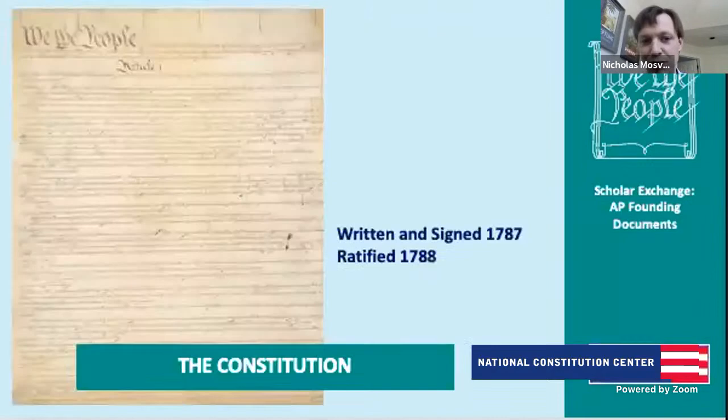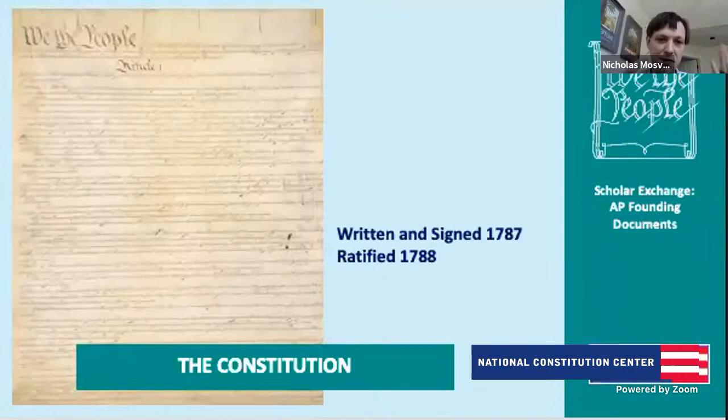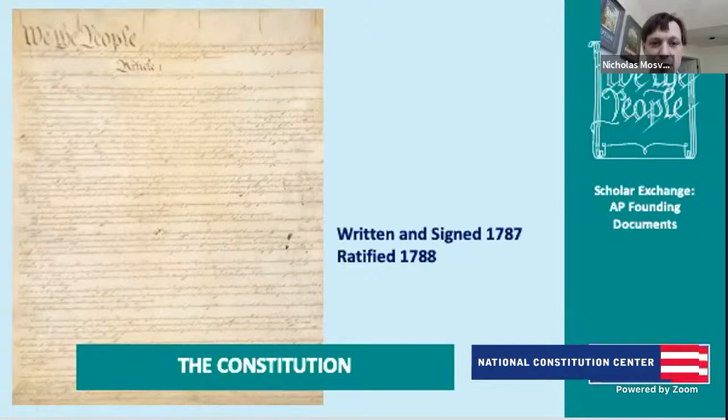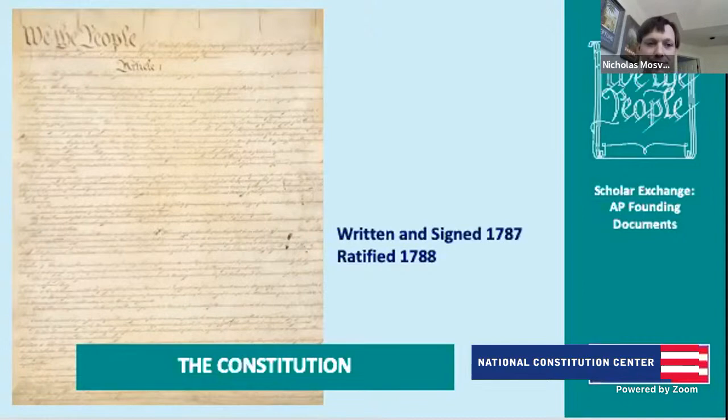The language of the preamble on popular sovereignty is one of the key links between the documents. As we turn to the Federalist Papers, the running theme is 'We the People' — the people themselves are the ultimate source of authority. By ratifying the Constitution in 1788, they in fact endowed it with power. Merely drafting, writing, and signing was not enough — the people had to approve it.